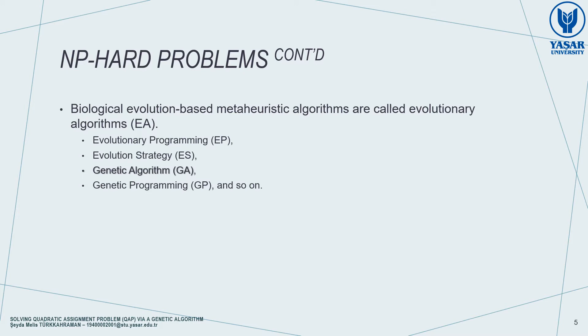Meta-heuristic algorithms based on biological evolution are called evolutionary algorithms. These include evolutionary programming, evolution strategy, genetic algorithm, and so on.